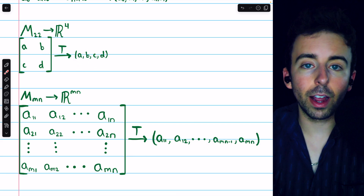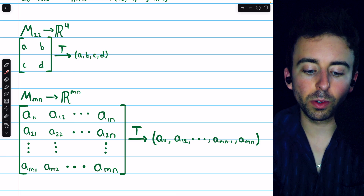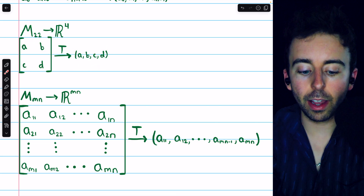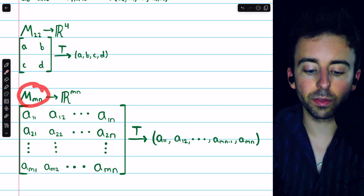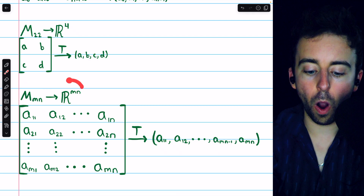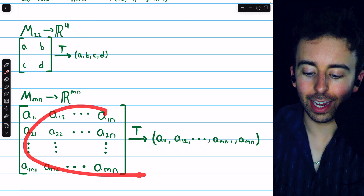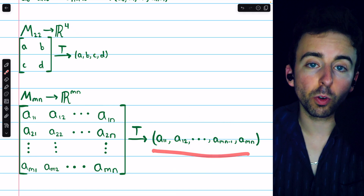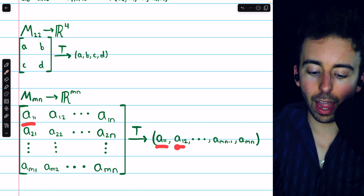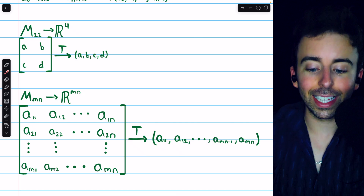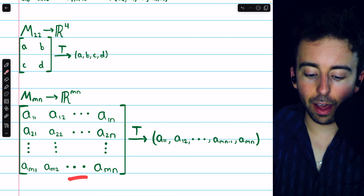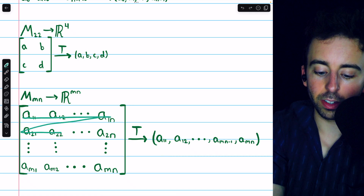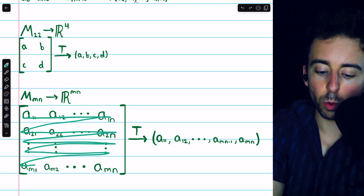Because the vector spaces are isomorphic, the difference between them is really just notational — how we choose to organize these four components. The more general example: the isomorphism from the vector space of M×N matrices to R^(MN) is defined similarly. It runs along the rows of the matrix to construct the tuple: A₁₁, A₁₂, and so on, finally ending at A_{M,N-1} and then A_{M,N}. So the isomorphism lists the components of the matrix going along the rows.